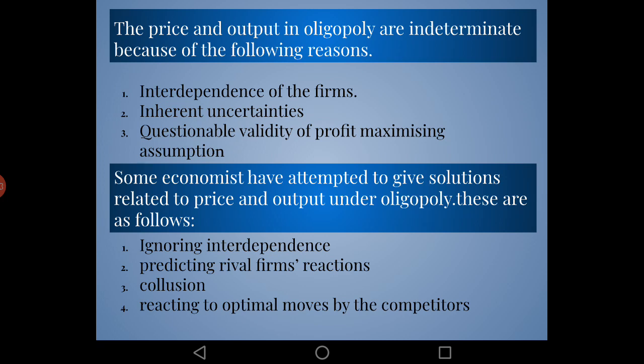The third point is the questionable validity of the profit maximization assumption. Neoclassical theory assumes profit maximization is the best solution for price and output determination. However, modern economists argue that profit maximization is not the only assumption — secure profit is more important than maximum profit. A secure profit allows a firm to easily survive in the market. Modern business firms aim at maximization of sales revenue rather than maximization of profit, as increasing sales revenue will ultimately increase profit.